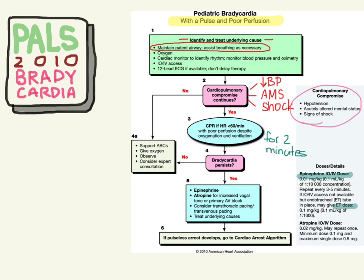Other drugs you can consider giving are atropine. You can give that IV or IO, and the dose is 20 micrograms per kilo, or 0.02 milligrams per kilo. We want to give a minimum dose, because if we give less than this, we could have a paradoxal bradycardia. There's also a maximum single dose of 0.5 milligrams, which is the same dose we now give to adults.